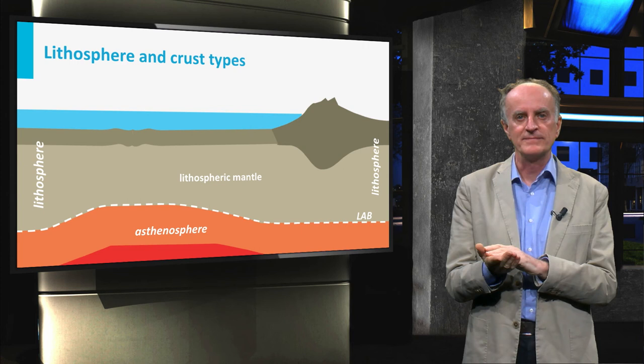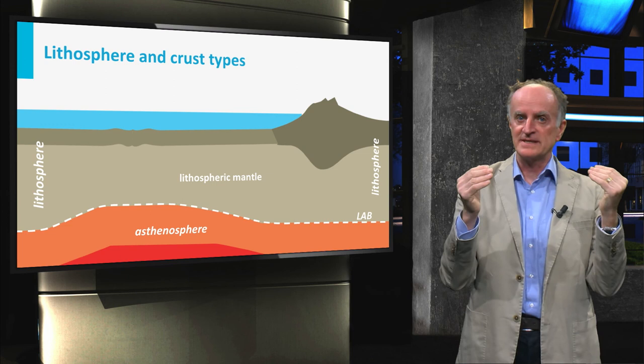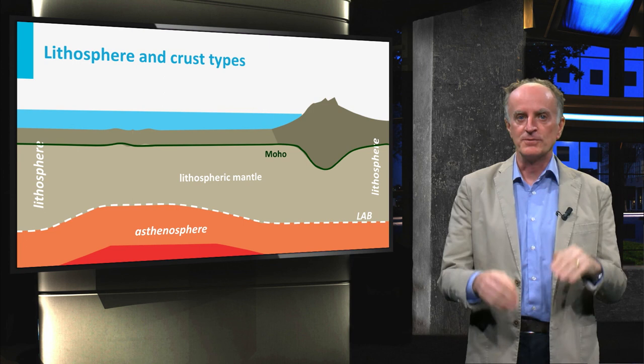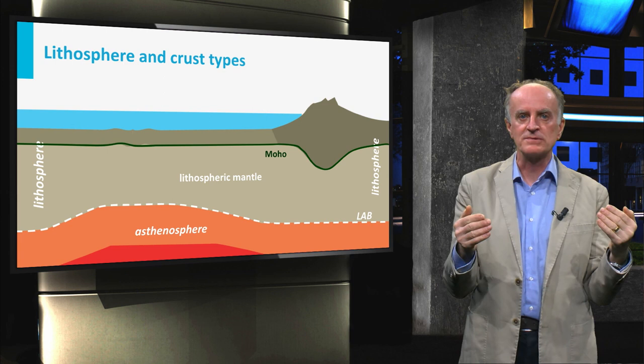We mentioned that the boundary between the asthenosphere and the lithosphere is an isotherm, and that its depth depends on the thermal gradient. The lithosphere itself is subdivided in two parts by the moho discontinuity. The domain below the moho is the lithospheric mantle, and is composed of cold and strong rocks.